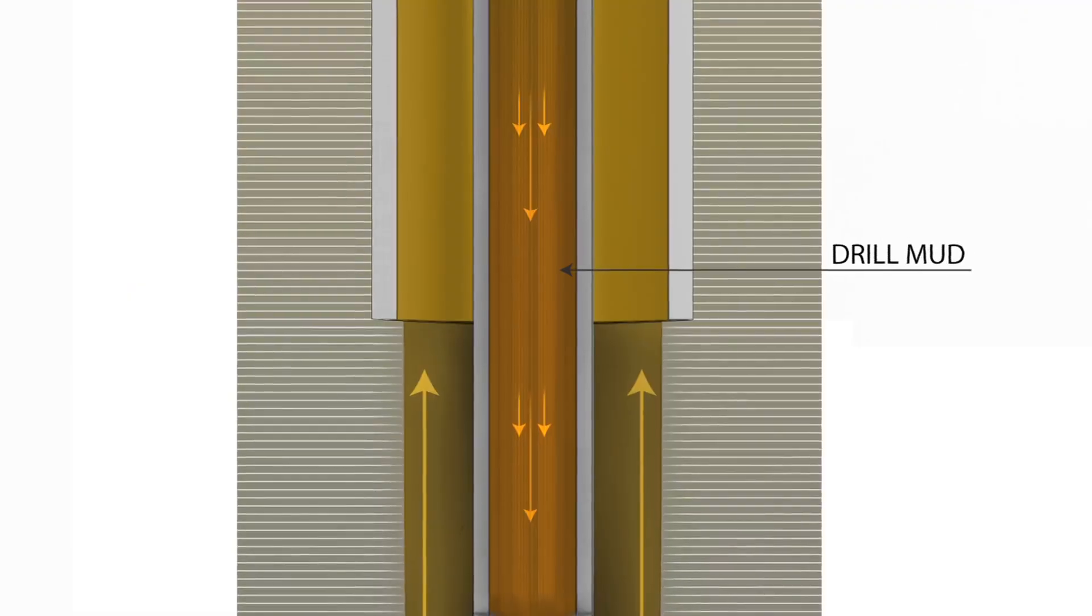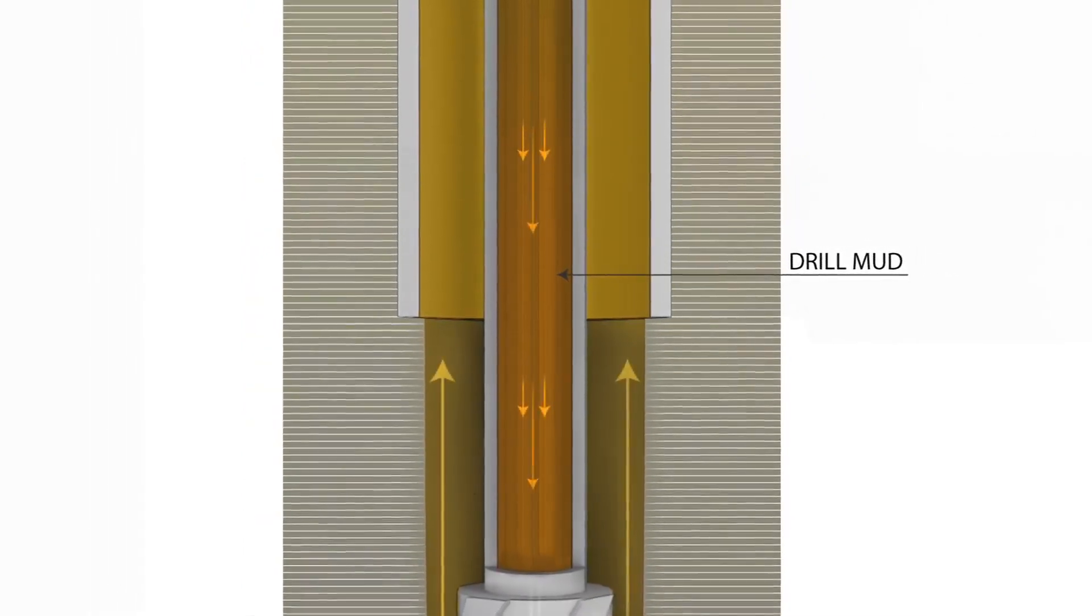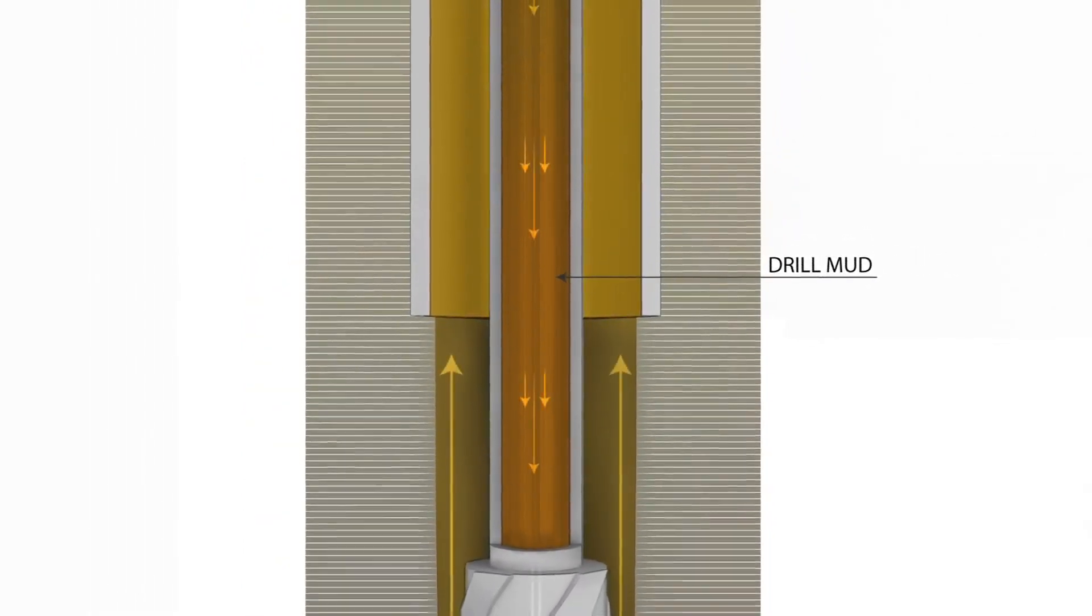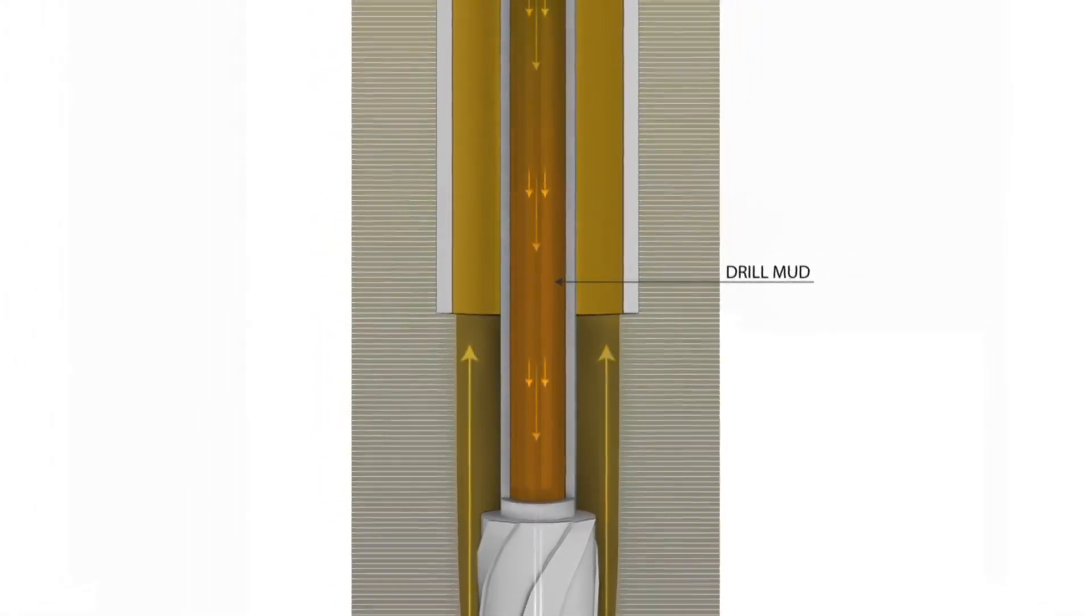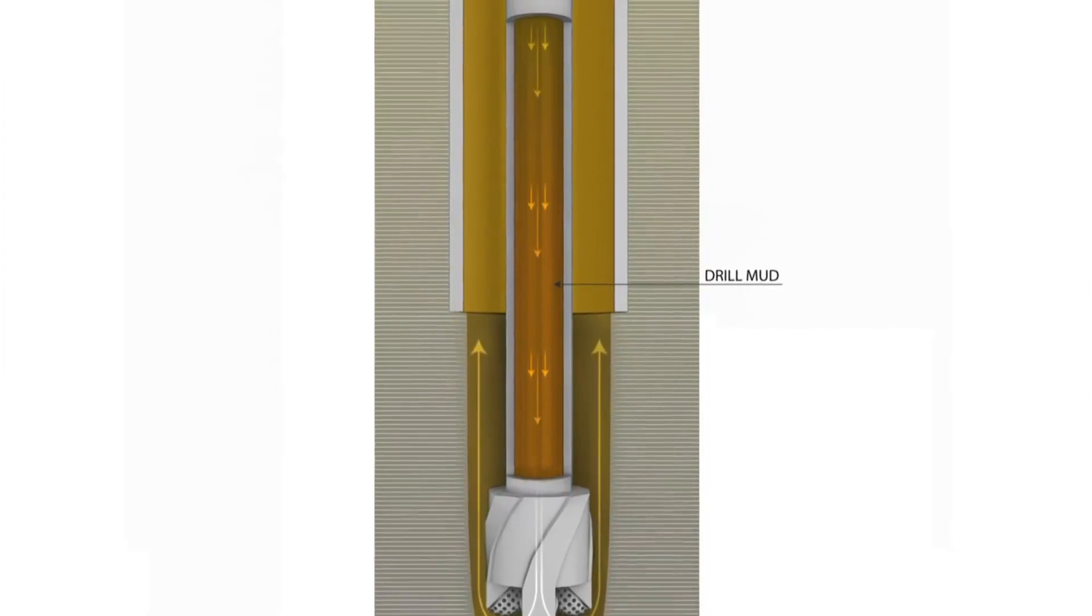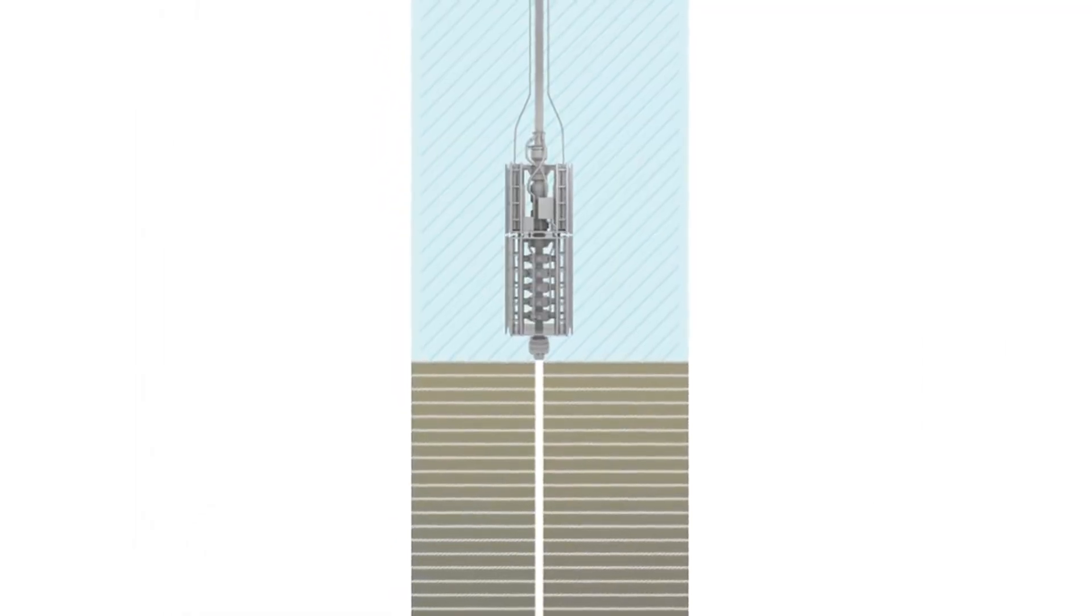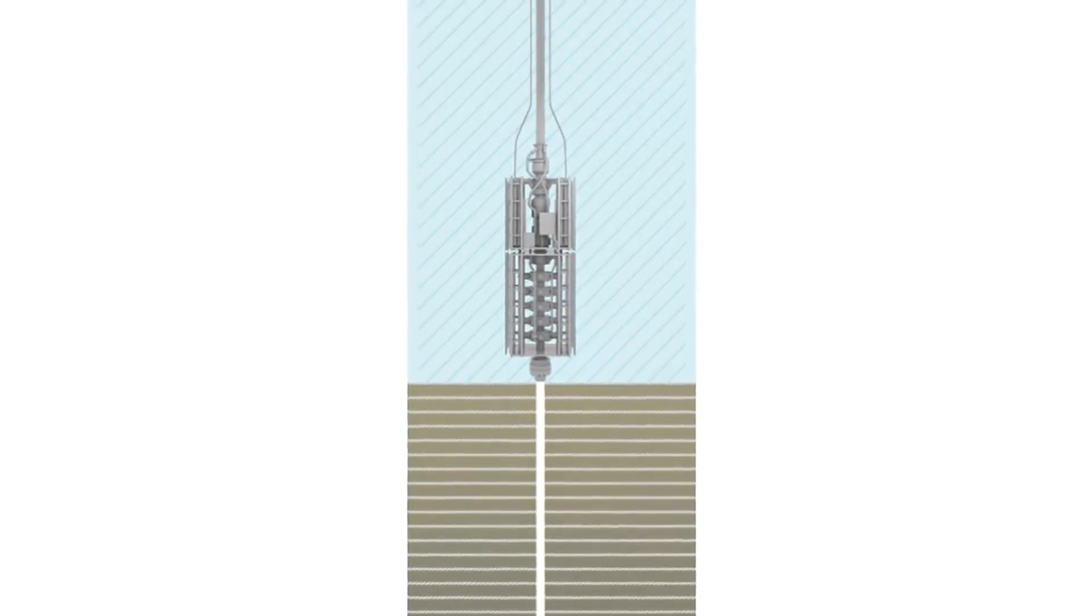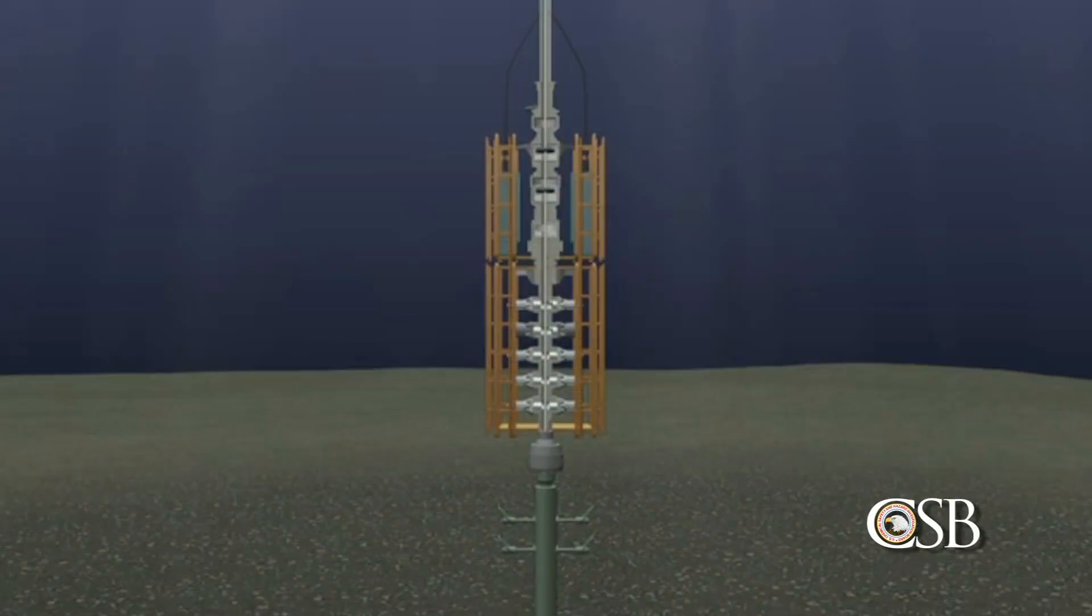To prevent kicks, drillers pump a dense slurry called drilling mud into the well, creating a barrier between the undersea oil and gas and the piping that leads to the rig. If this mud barrier fails or is somehow removed, the safety of the drilling crew depends on a critical piece of equipment located on the sea floor called the blowout preventer, or BOP.